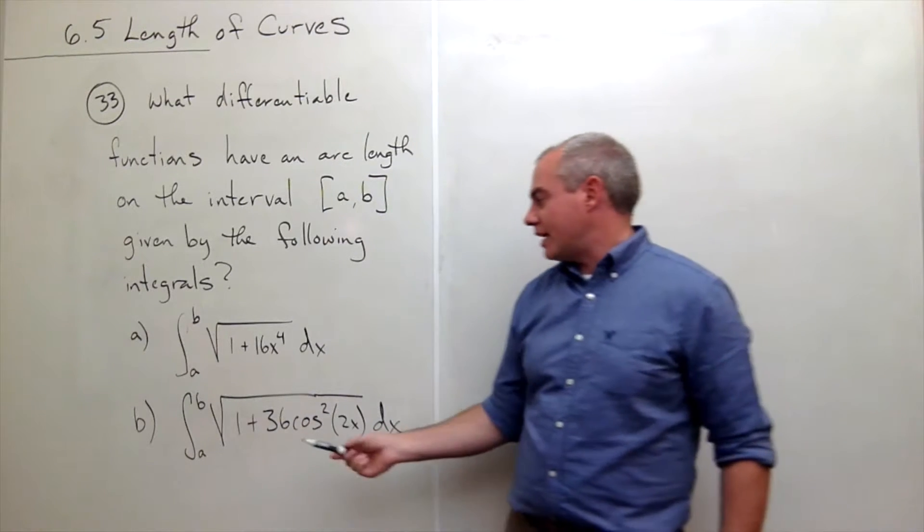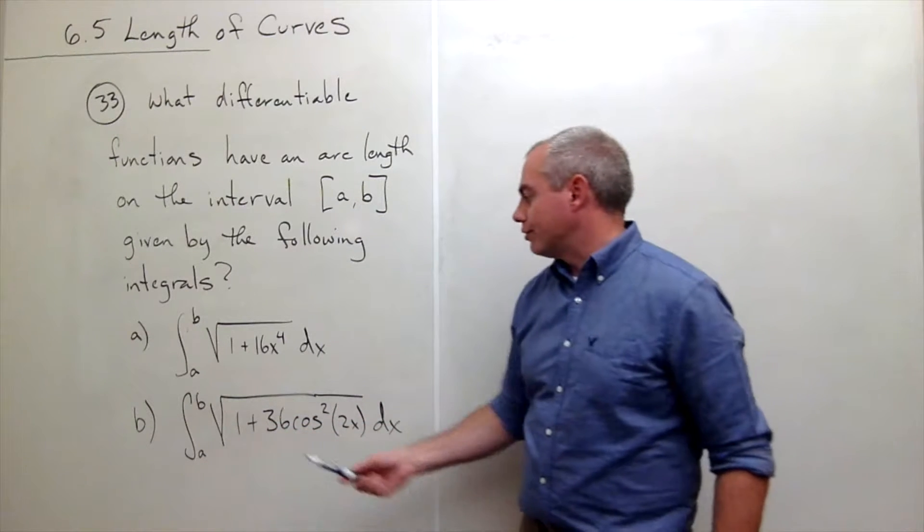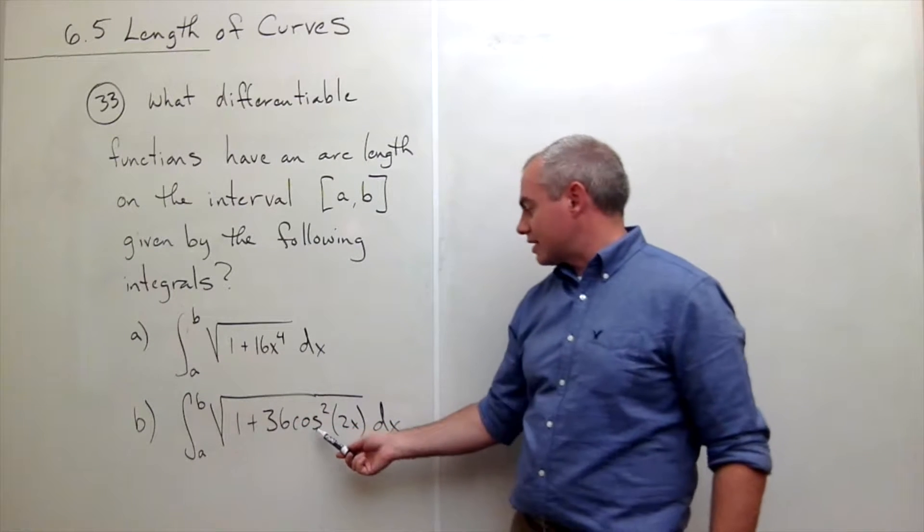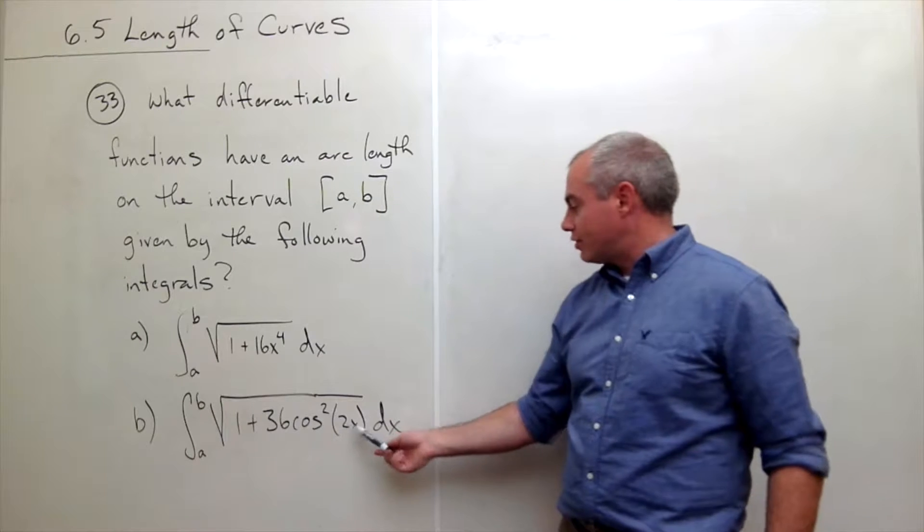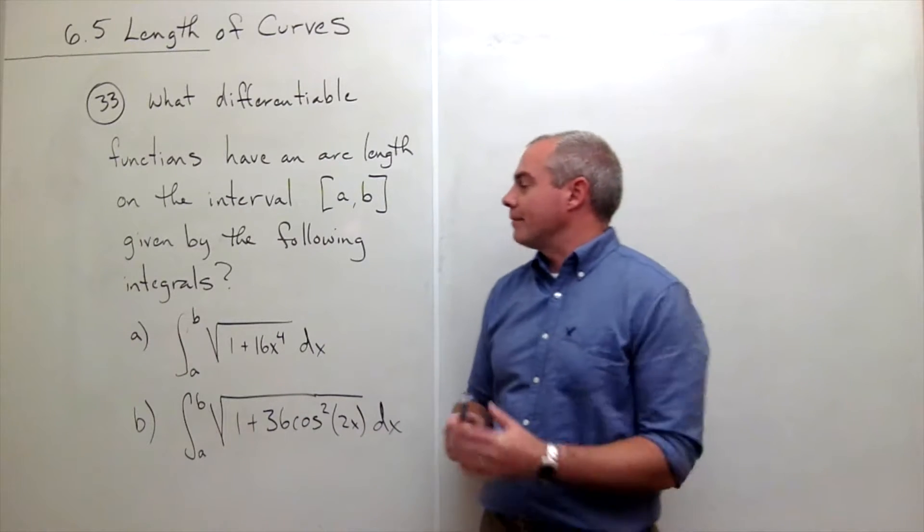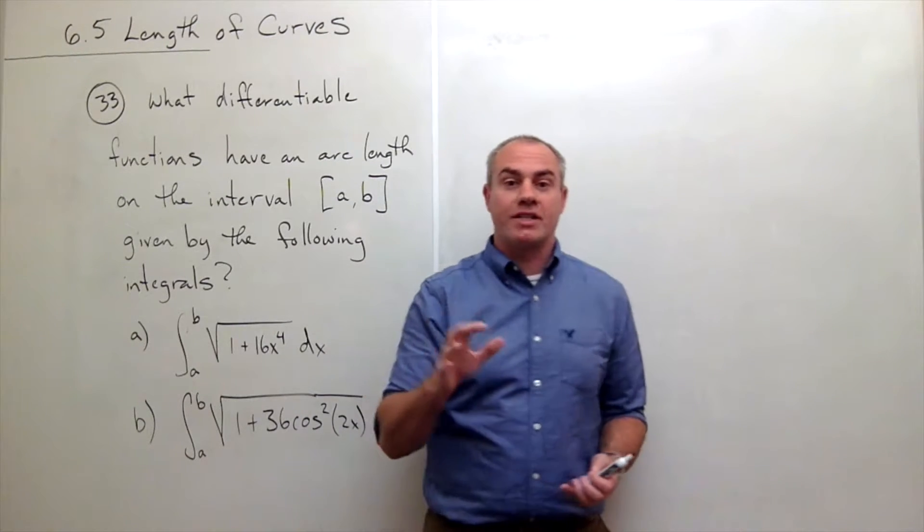and the second is the integral from a to b of the square root of 1 plus 36 cosine squared of 2x dx. So this is a little bit different type of problem.